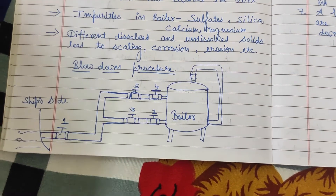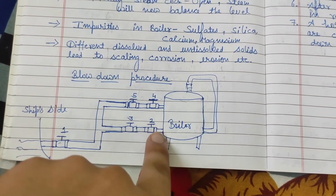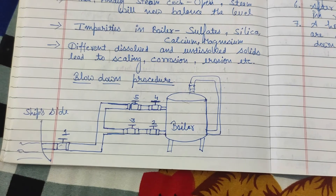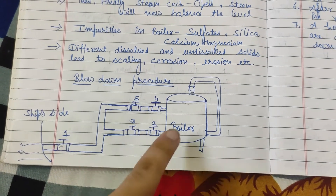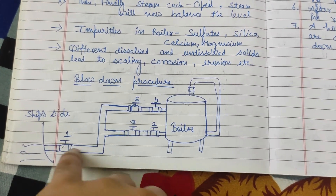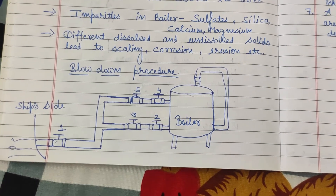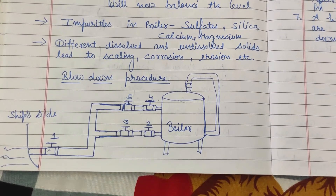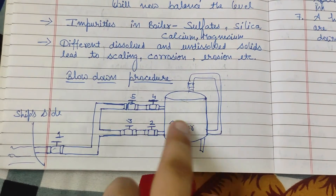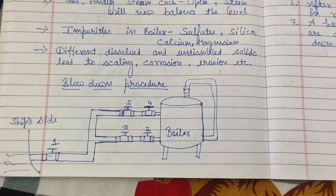To close, we first close the third valve, then close the second valve — in the opposite order to opening. After both valves are closed, we close the ship side overboard valve. The same procedure is followed for the scum blowdown as well.